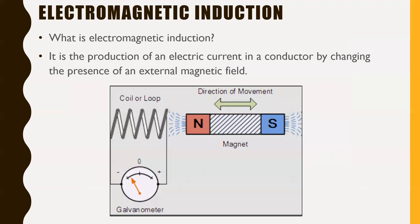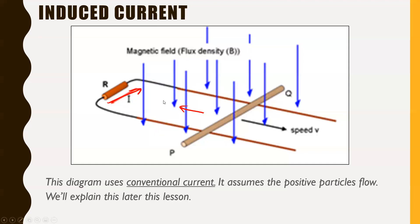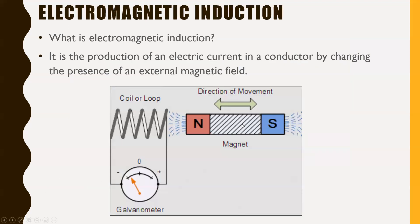Electromagnetic induction is the production of an electric current in a conductor by changing the presence of an external magnetic field. You could also move your magnet and get a similar effect, generating an electric current. The easiest way to think about this: if you had a coil of wire and took a magnet and started moving it in and out of that coil, you're going to induce an electric current. When you induce a current, you're also inducing an opposing magnetic field, which is pushing the current through.